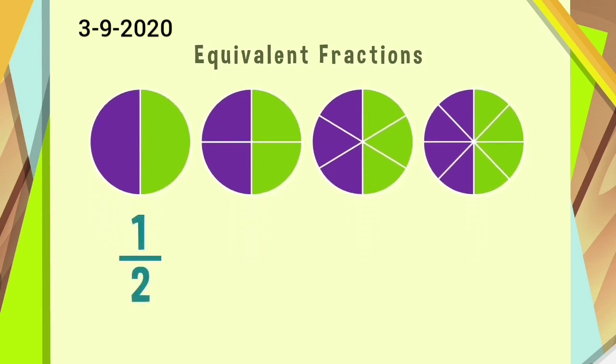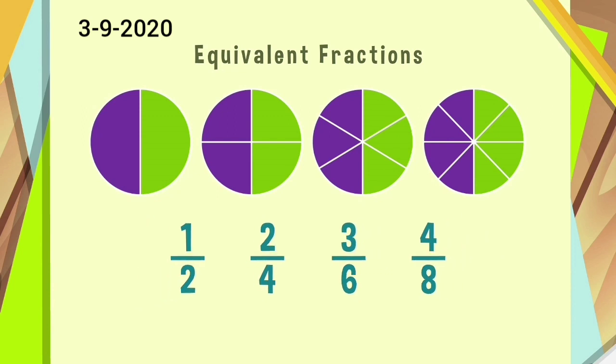Thus, we can observe that the same part of the circle is shaded in all the figures. Thus, 1 upon 2, 2 upon 4, 3 upon 6, 4 upon 8 represent the same portion of the circle and are equal. 1 upon 2 equals 2 upon 4 equals 3 upon 6 equals 4 upon 8. All these are equivalent fractions.